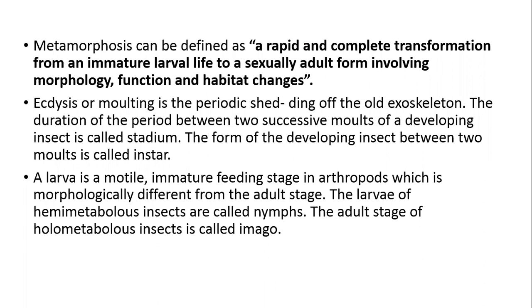Metamorphosis can be defined as a rapid and complete transformation from an immature larval life to a sexually adult form involving morphological, functional, and habitat changes. Molting is the periodic shedding of the old exoskeleton. The duration of the period between two successive molts of a developing insect is called stadium. The form of the developing insect between two molts is called instar. A larva is a motile immature feeding stage in arthropods which is morphologically different from the adult stage. The larvae of hemimetabolous insects are called nymphs, and the adult stage of holometabolous insects is called imago.